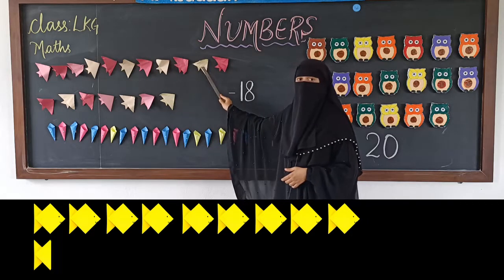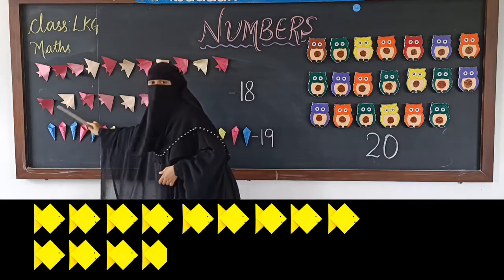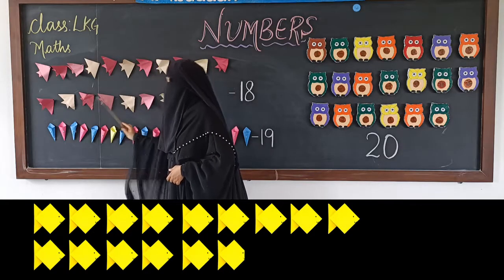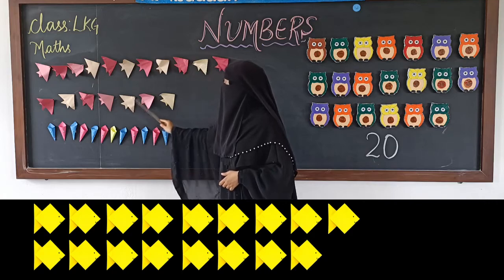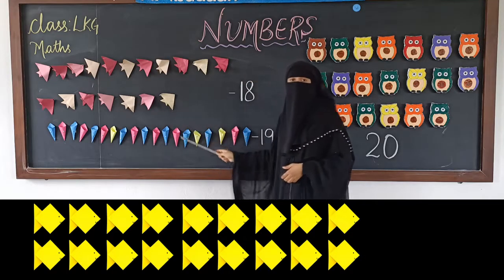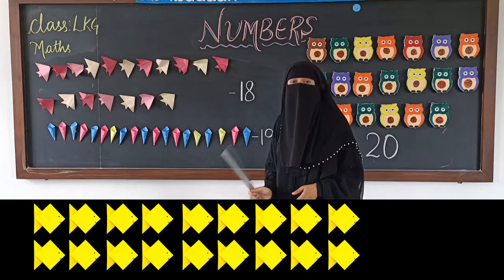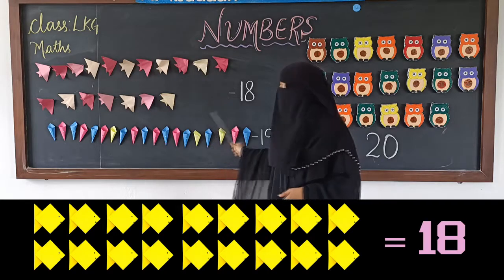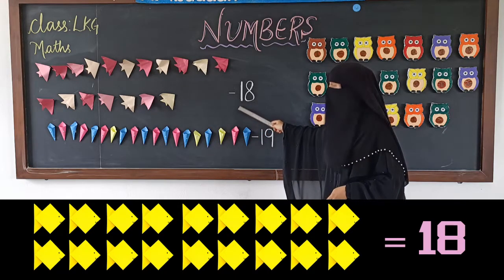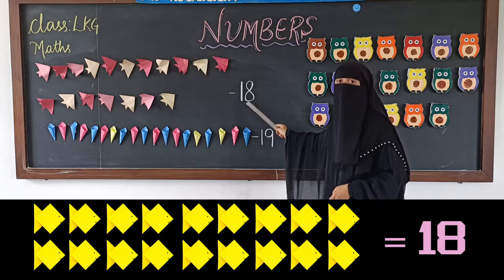...12, 13, 14, 15, 16, 17, 18. There are how many fishes altogether? 18! Now see how to write 18: 1 and 8 makes number 18.